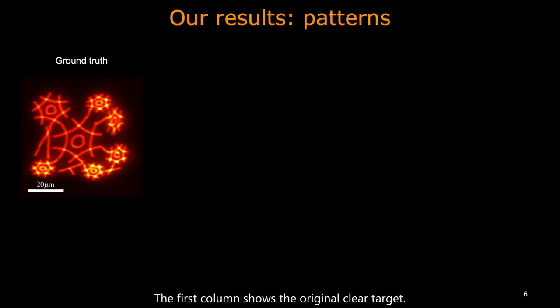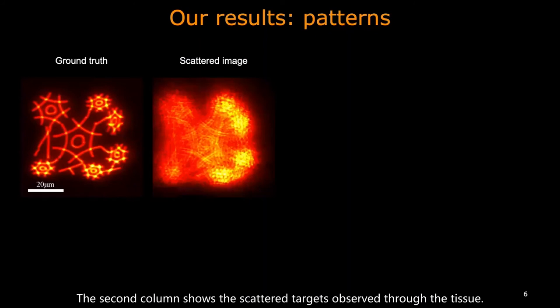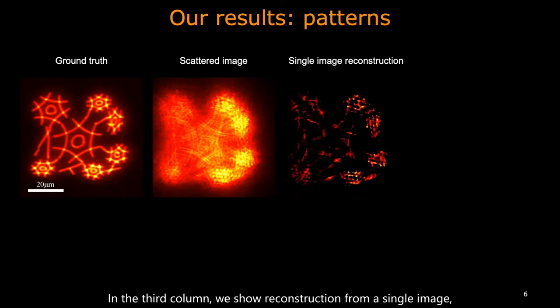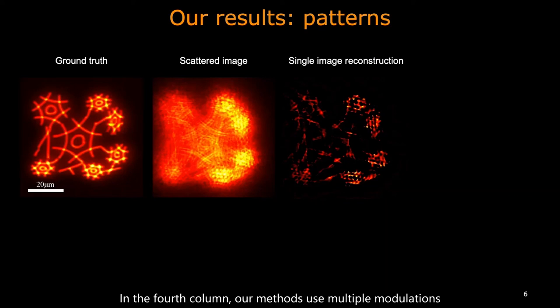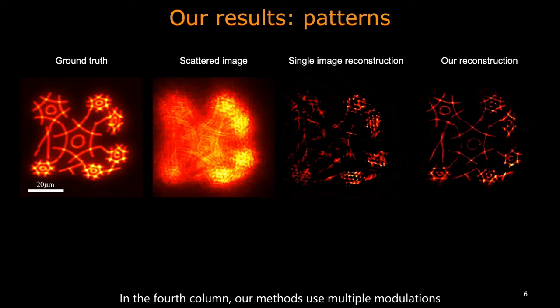Here are some examples. The first column shows the original clear target. The second column shows the scattered targets observed through the tissue. In the third column, we show reconstruction from a single image — its quality is poor due to the weak correlation. In the fourth column, our method uses multiple modulations and achieves a much better reconstruction.